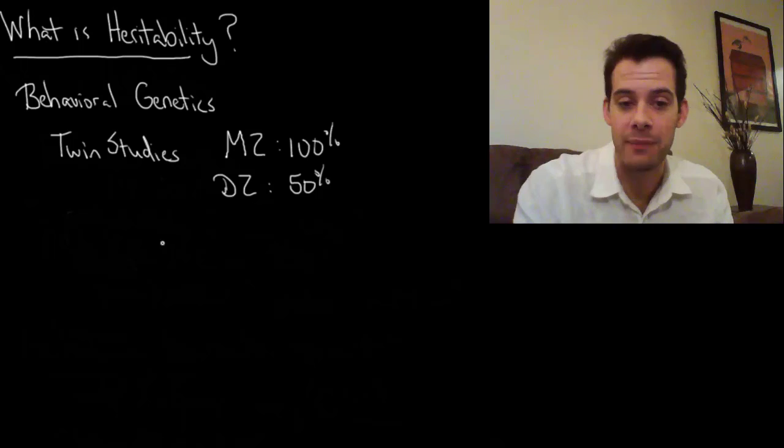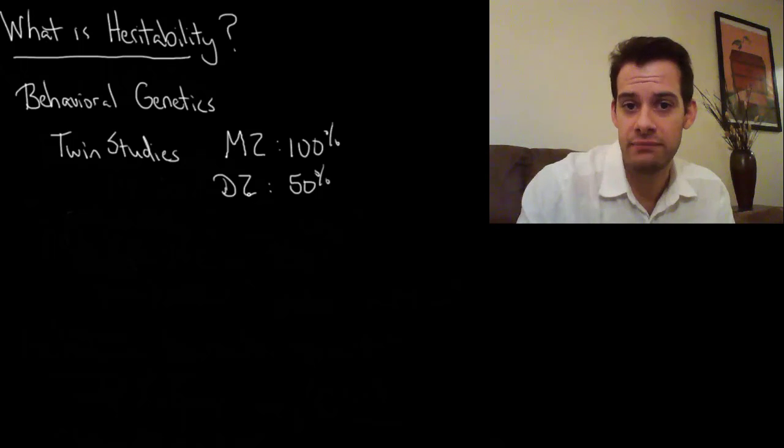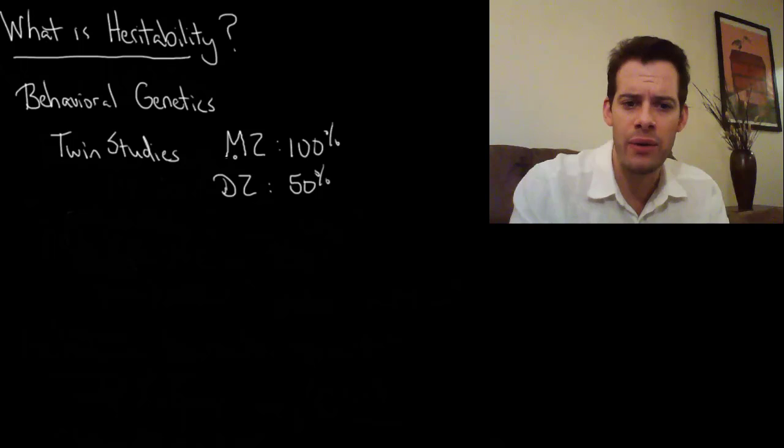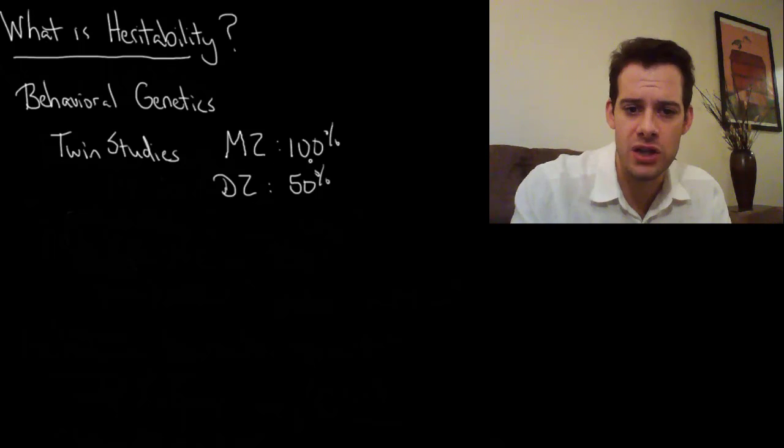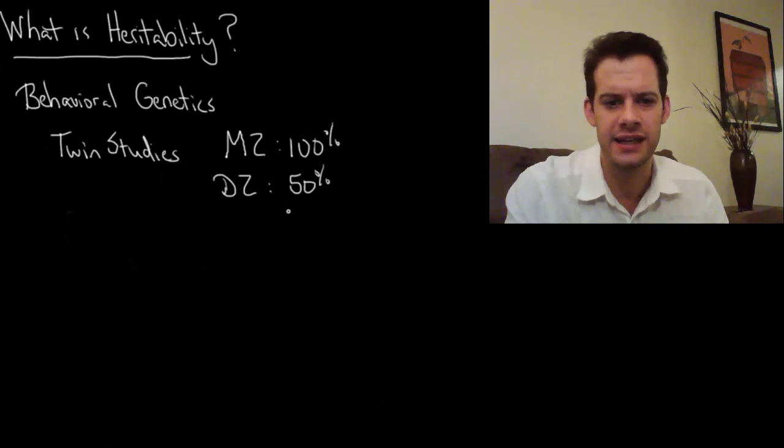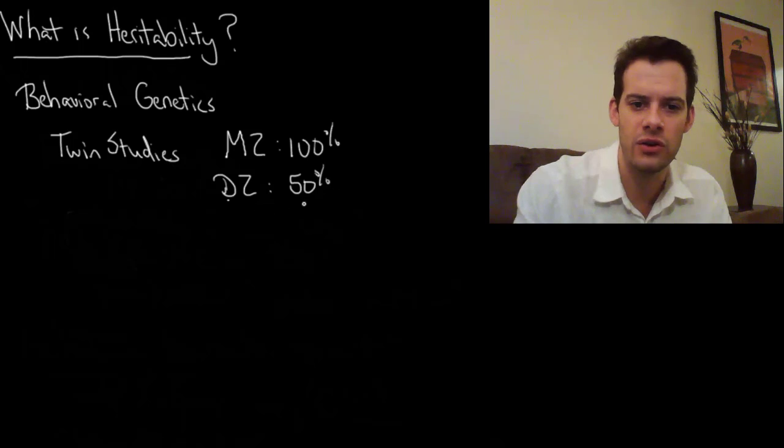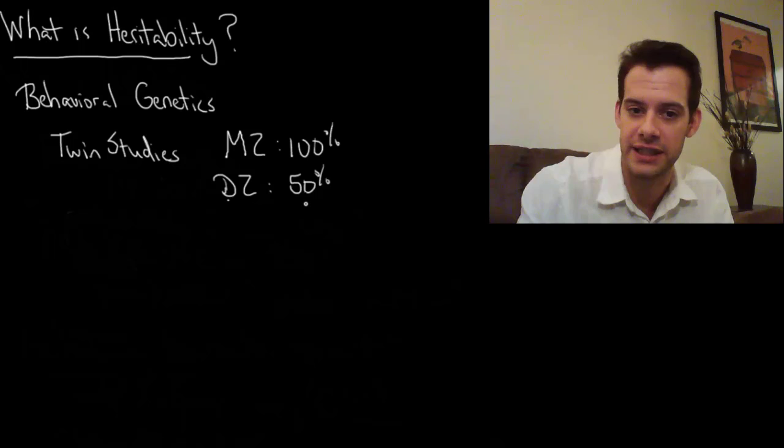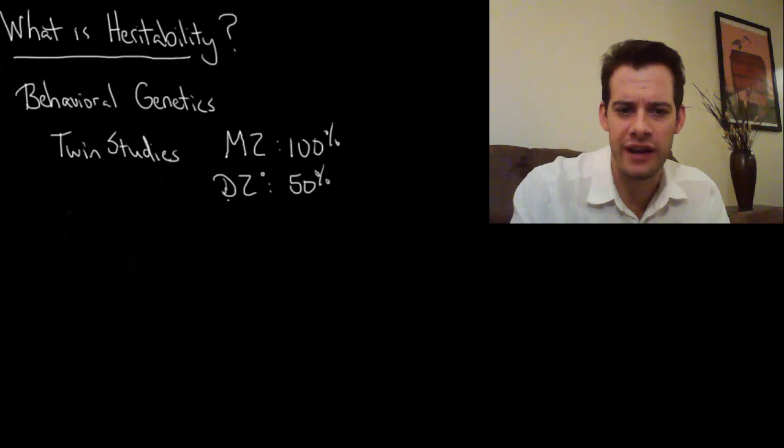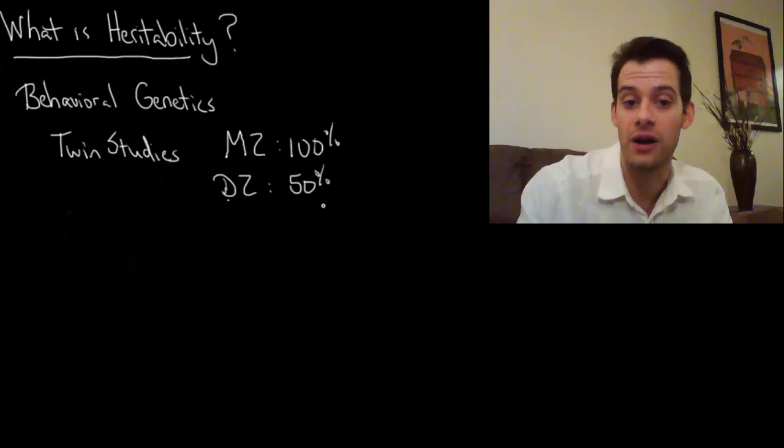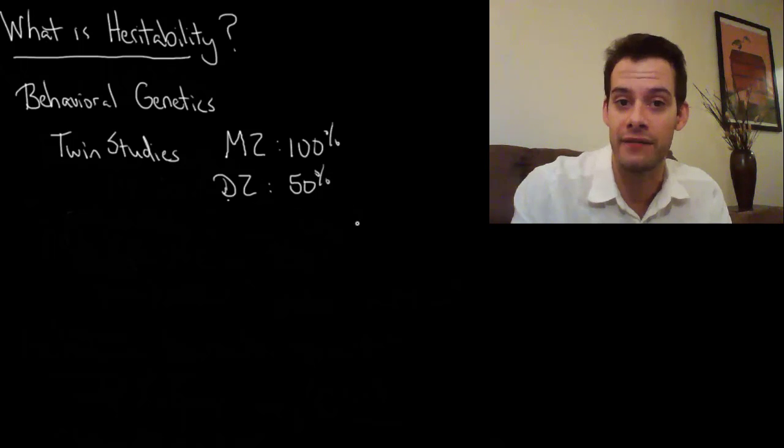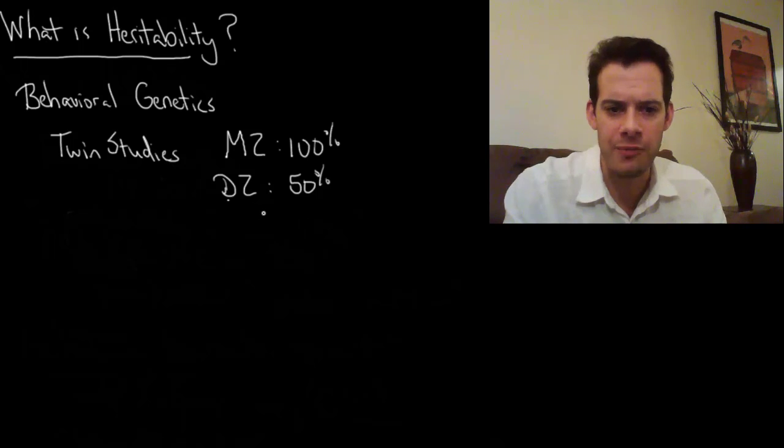So for example, if I was interested in studying IQ, I might want to see do monozygotic twins who share 100% of their genes have more similar IQs than dizygotic twins who only share 50% of their genes? And if the monozygotic twins are more similar, then that would suggest that genes are having an influence on the similarity of their IQ score.